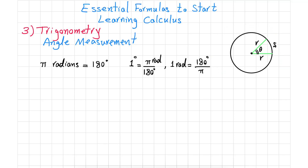If you consider a portion of that circle with arc length s, then s is equal to r times theta, where theta is in radians. So for this sector, you can obtain the length of that arc.